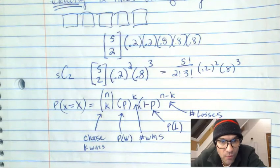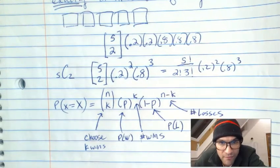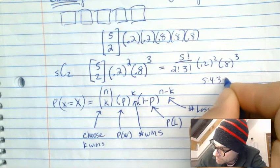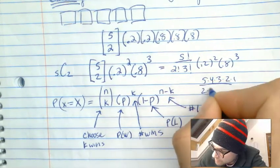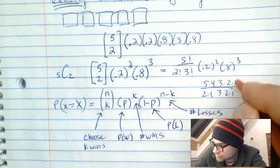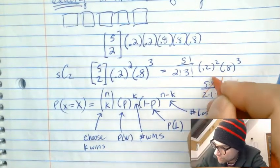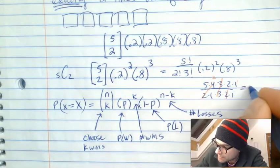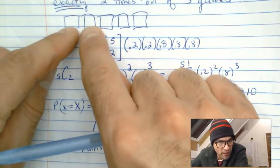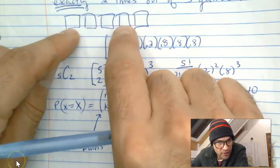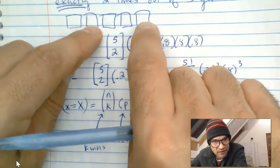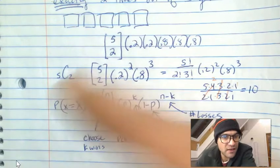Let's figure out the first part, then multiply it through. Five times four times three times two times one, over two times one times three times two times one. The threes, twos, and ones cancel. Two over four gives me two, so five times two gives 10 ways to choose the winners. And you can verify all 10 different arrangements where exactly two of the five games are wins.